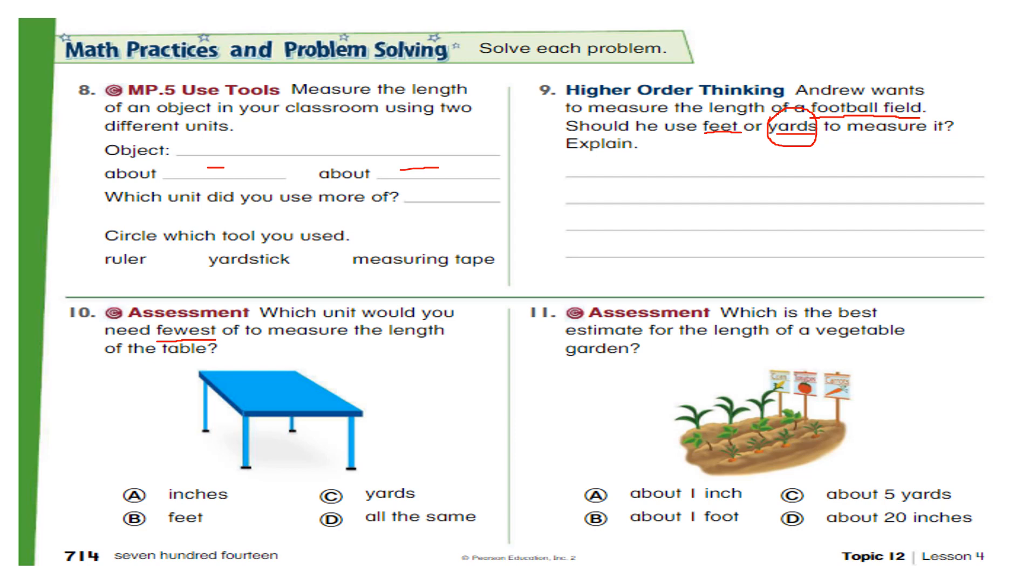Question 11. Which is the best estimate for the length of a vegetable garden? Best estimate? You have to guess. You have to guess the close answer. So this is a garden where someone has planted vegetables. So about how long it could be? It could be about 1 inch only. Or it's about 1 foot. Just like your book. Or a garden is about 20 inches.